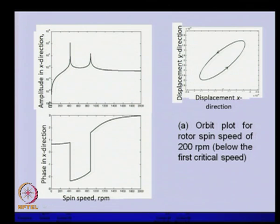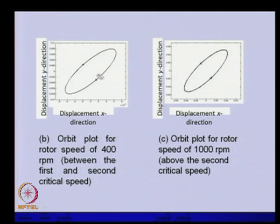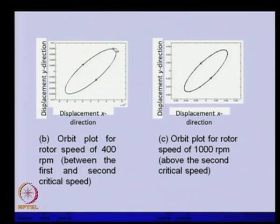Below the critical speed — for example at 200 rpm — the sense of rotation is counter-clockwise. Between the two critical speeds, the sense of rotation changes to clockwise. If we cross the second critical speed, it rotates counter-clockwise again. This indicates in which region of the critical speed range we are operating. The shape of the orbit also helps in understanding what kind of fault may exist in the rotating machinery and gives indication of incipient faults.